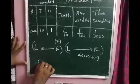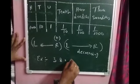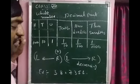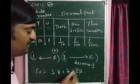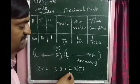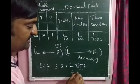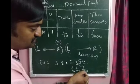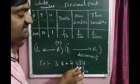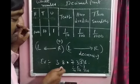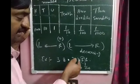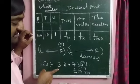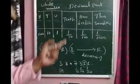Example: 38.7356. How do you find the place value? What is the place value of 5? Observing the table from the decimal point onwards: the first decimal place is tenths, the second is hundredths, the third is thousandths. So the place value of 5 is thousandths. Also, what is the place value of 3? In the decimal part, 3 occupies the hundredths place. The 3 in the whole number part occupies the tens place.